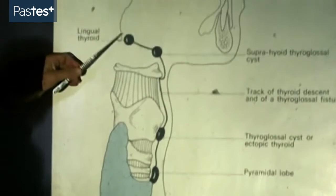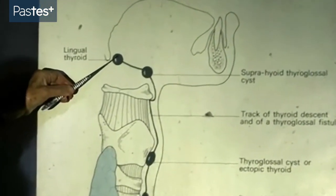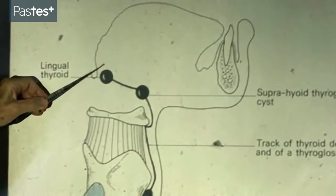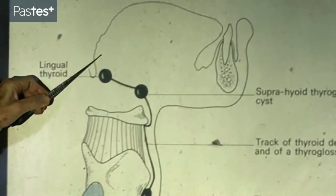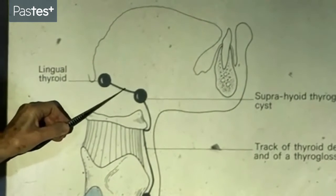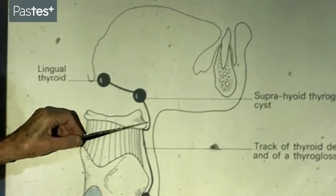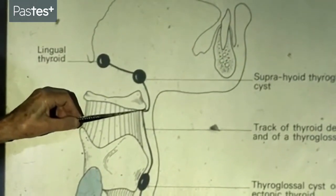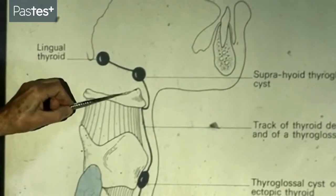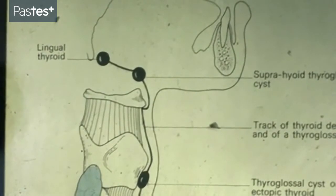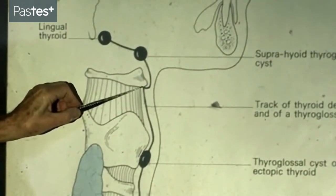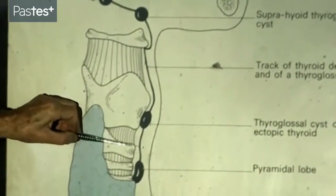Now let's look at the embryology. The thyroid gland commences at the dorsum of the tongue, at the junction of the anterior two-thirds and posterior third, at a little dimple called the foramen cecum - cecum means a blind ending pit. It migrates along a track, the thyroglossal track, down closely related to the hyoid bone. We were taught that the track actually passes through the developing hyoid bone - it doesn't, it just tethers against the back of the hyoid bone. It's closely related to the hyoid, and then it descends down to its definitive position.